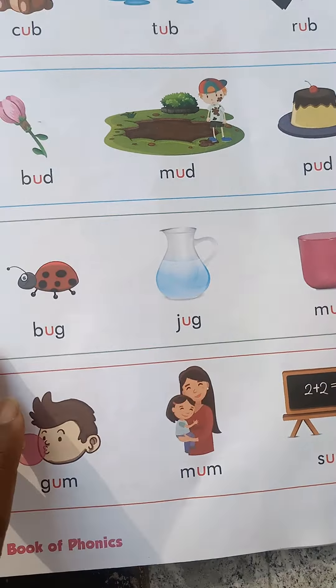Other words with UG: B-UG, bug; J-UG, jug; M-UG, mug. Other words with UM: G-UM, gum; M-UM, mum; S-UM, sum.